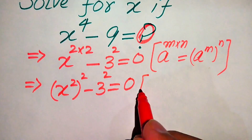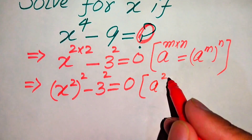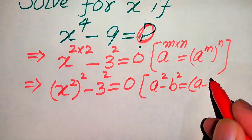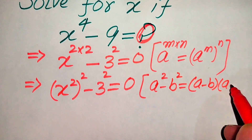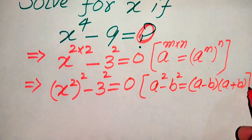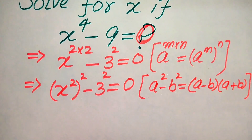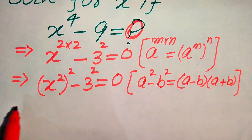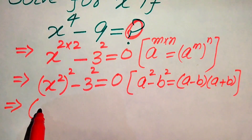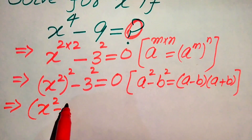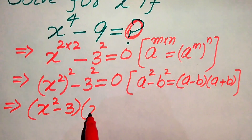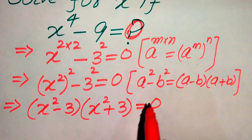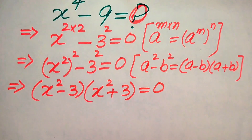Here we apply the algebraic formula: a squared minus b squared equals to (a minus b) times (a plus b). According to this formula, the left hand side becomes (x squared minus 3) times (x squared plus 3) and this whole equation equals to 0.